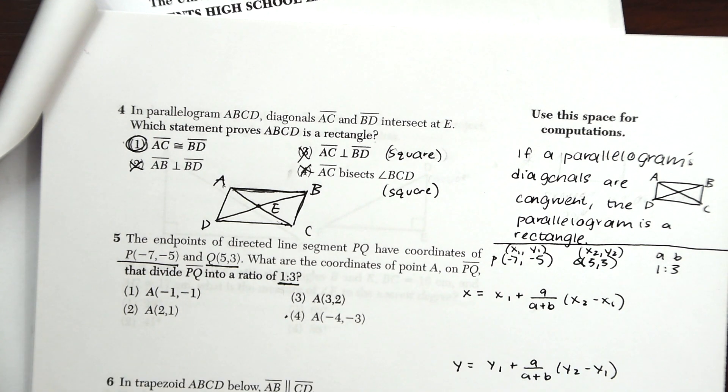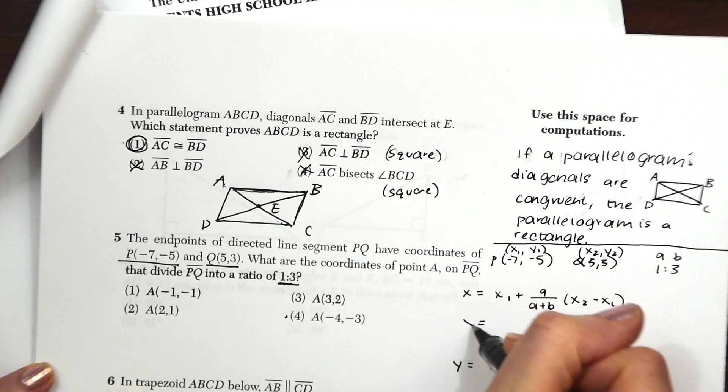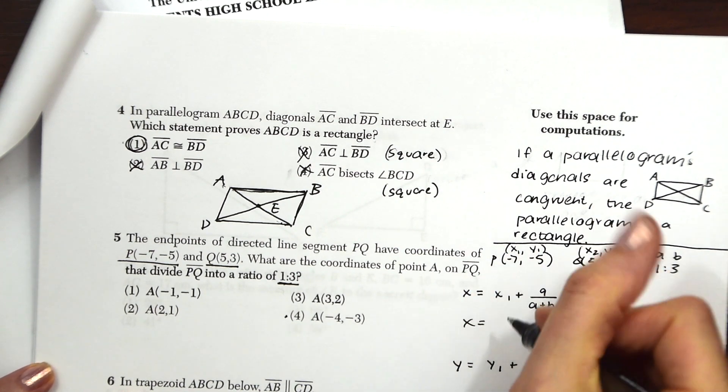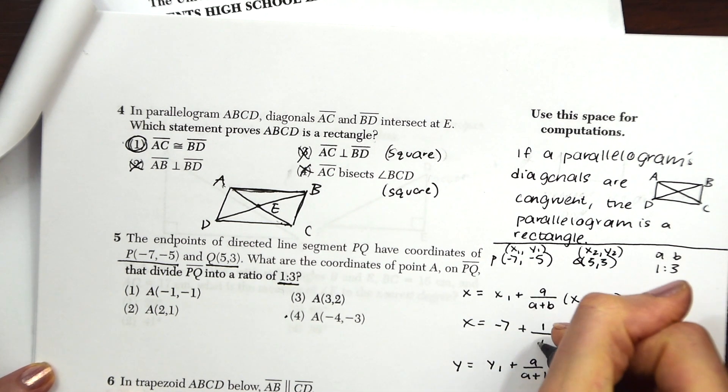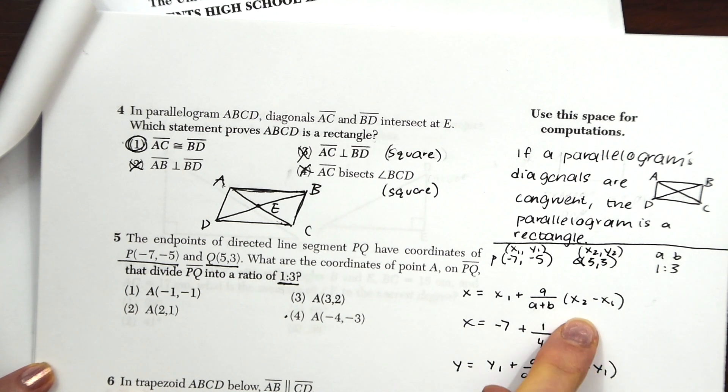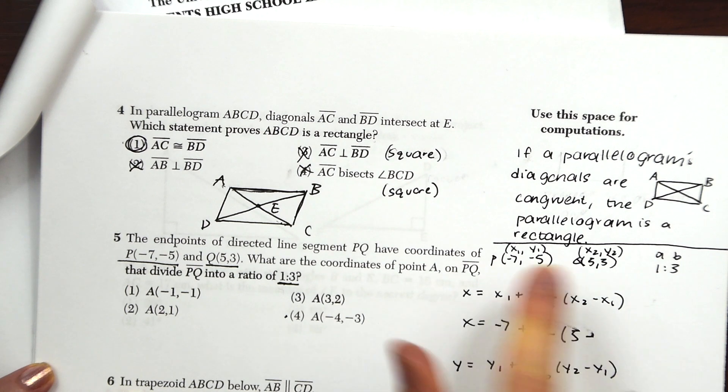For the x coordinate, we're just going to start plugging in our points that they give us. To find x, we're going to plug in x1, so negative 7, plus A is 1, over A plus B, so that's just going to be 4, times x2, which is 5, minus x1, negative 7.